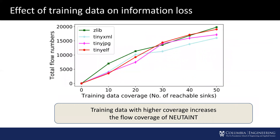We investigate the effect of training data coverage on NeuTaint's information loss. A flow is defined as a taint source and sink pair, and information loss occurs when the flow from taint source to sink is not detected. This occurs mainly when training data does not cover all the sink variables that appear in the testing dataset. The results show that on four programs, flow coverage increases with the training data coverage rate.